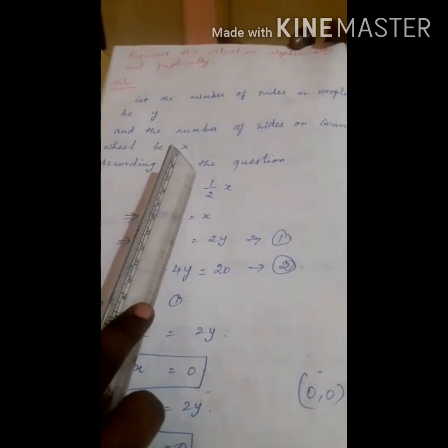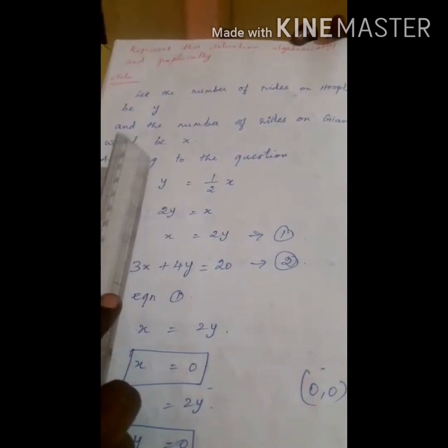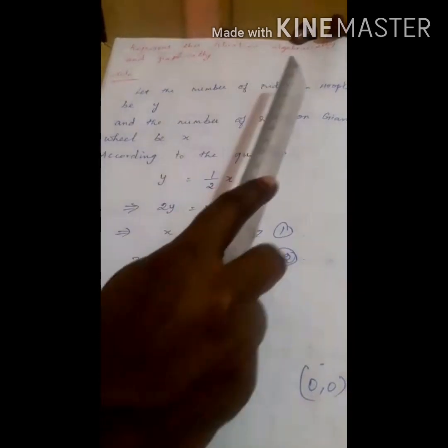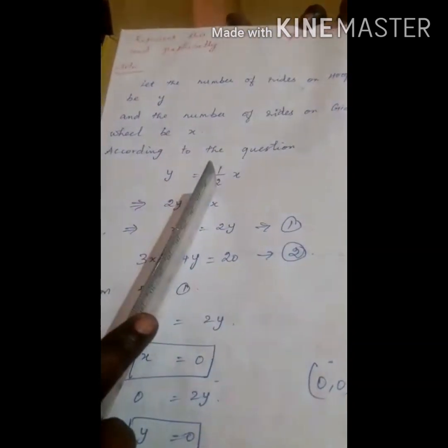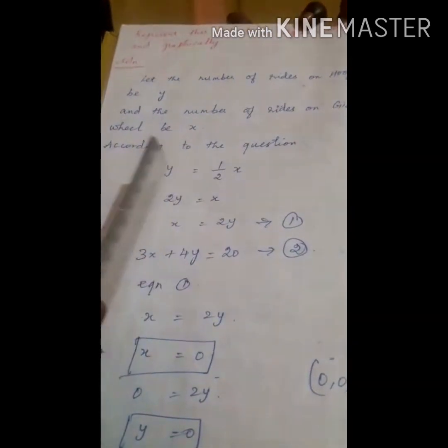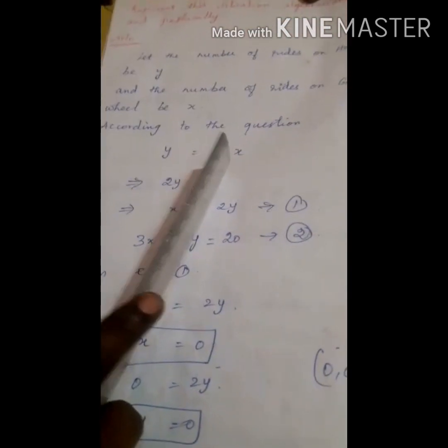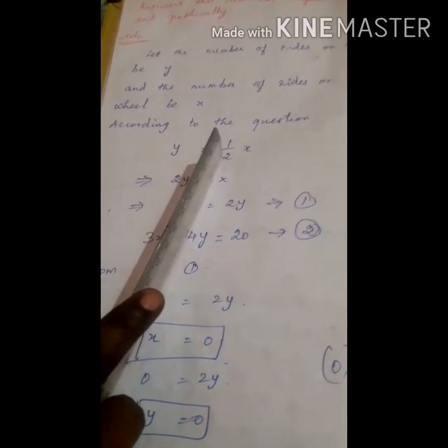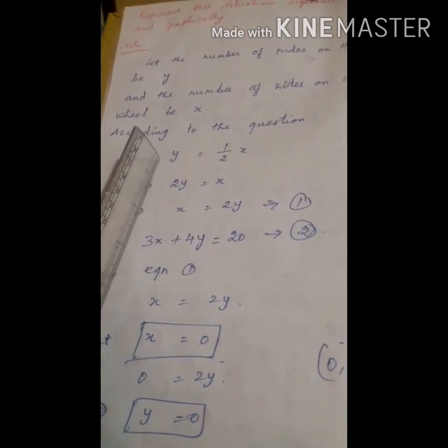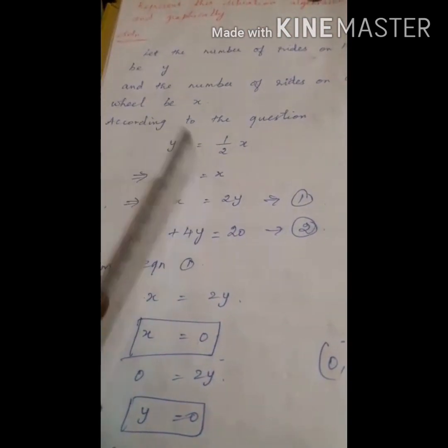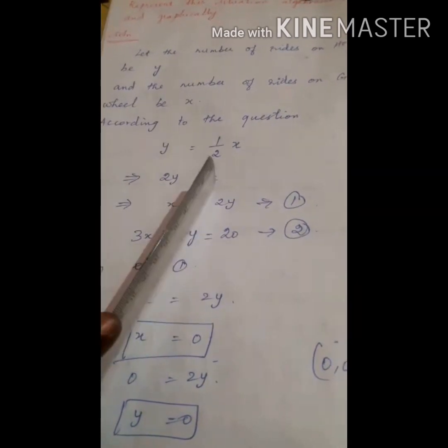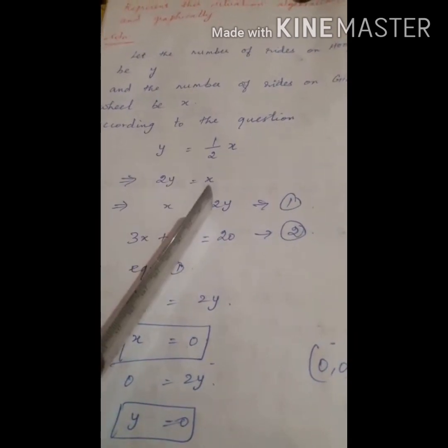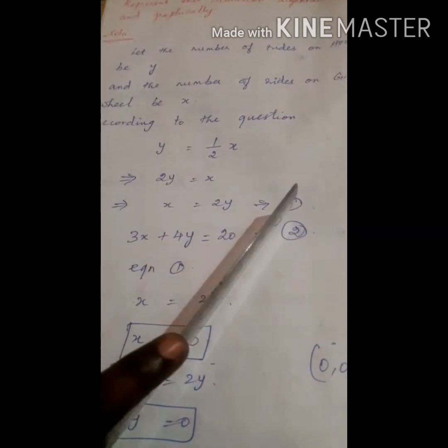According to the first condition: the number of times she played hoopla is equal to half the number of rides on the giant wheel. Let the number of rides on the giant wheel be x and hoopla be y. So y is equal to half of x. Transposing 2, we get 2y is equal to x, that means x is equal to 2y. This is considered as Equation 1.